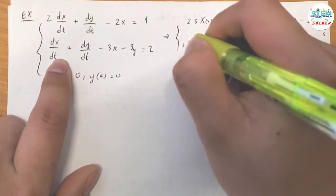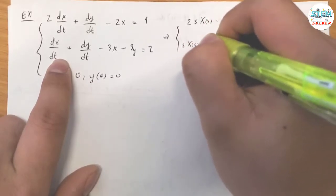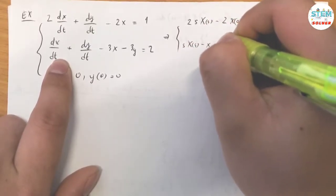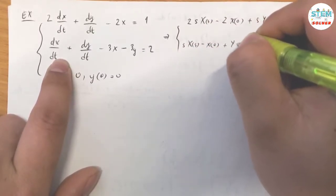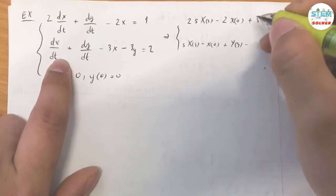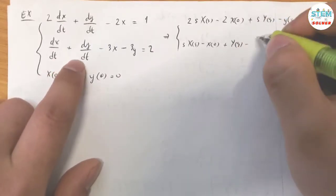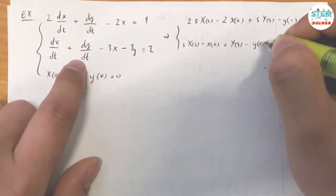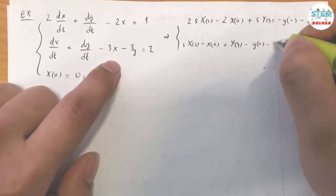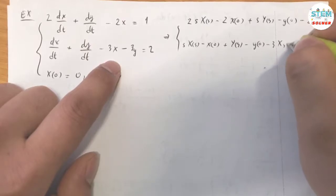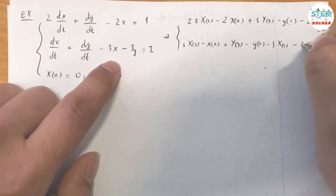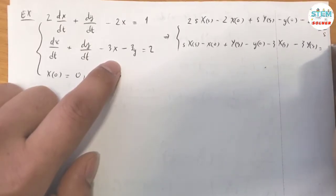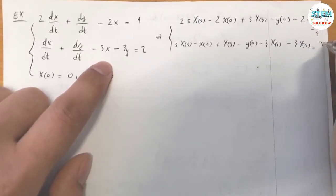For the second equation, the transform gives: S·X(S) minus X(0) plus Y(0) minus Y(S) minus Y(0) minus 3·X(S) minus 3·Y(S) equals two over S.